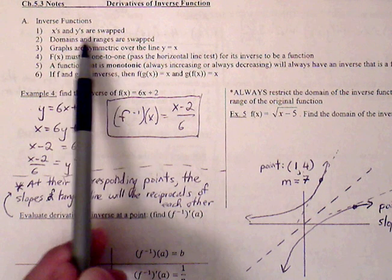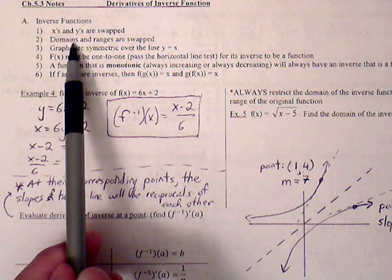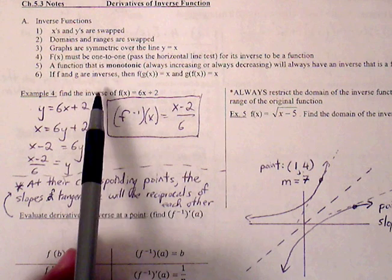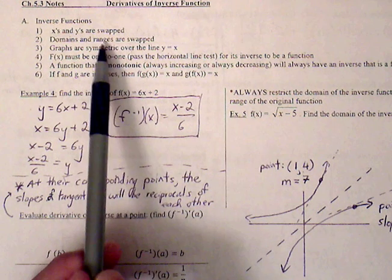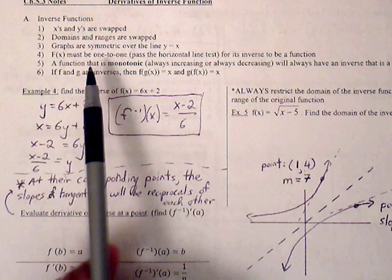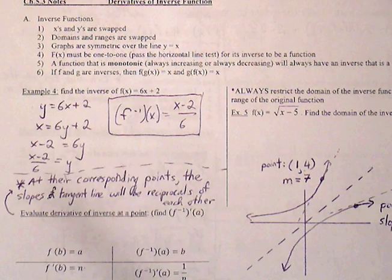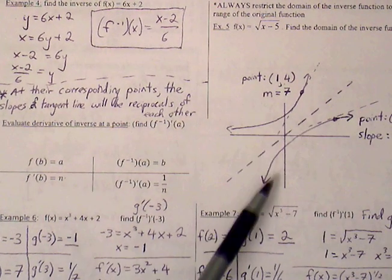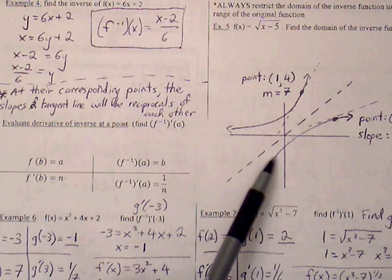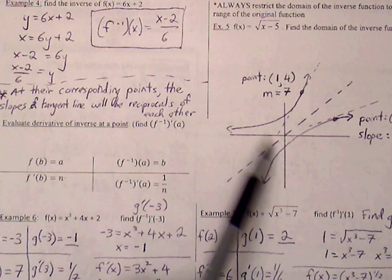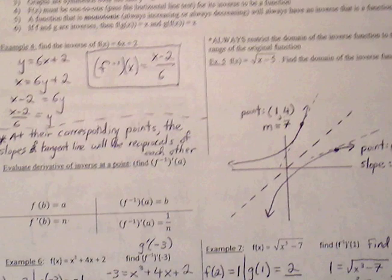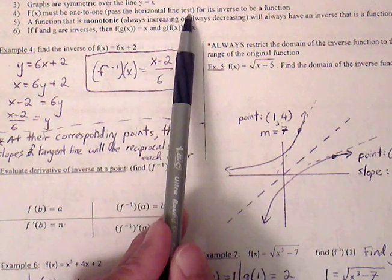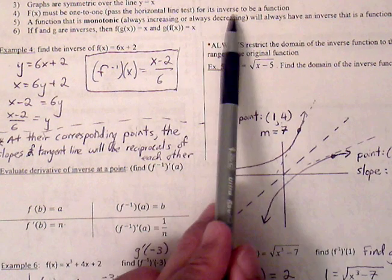Domain and ranges are also swapped. The domain of the original function is the range of the inverse, and the range of the original function is the domain of the inverse. Graphs are symmetric over the line y equals x — you can always fold over that line and the function and its inverse will overlap exactly. F of x must be one-to-one and pass the horizontal line test in order for its inverse to be a function.